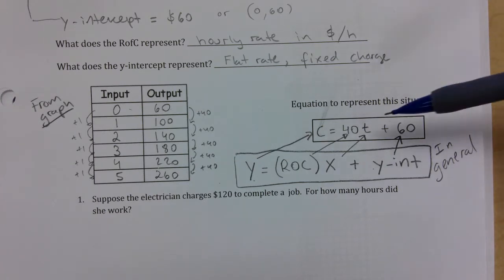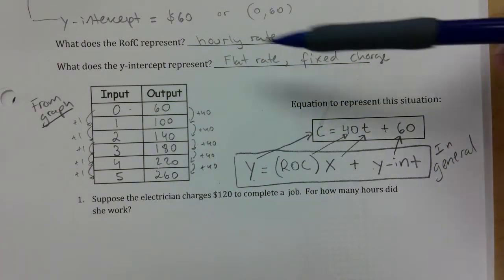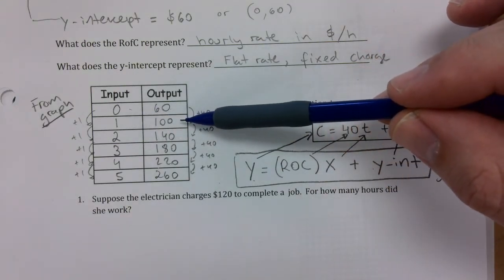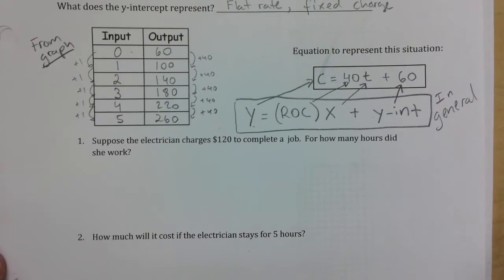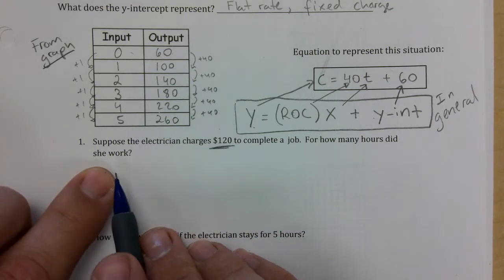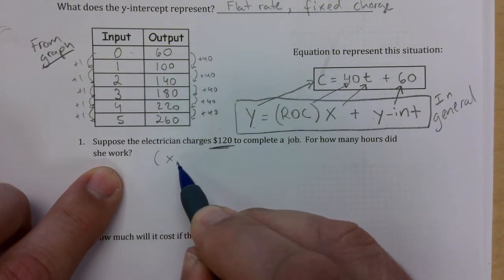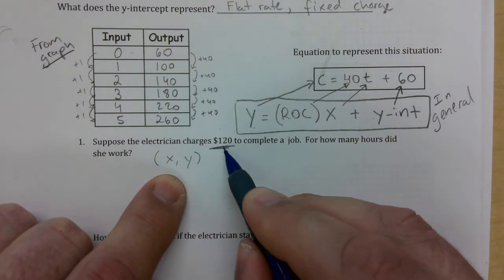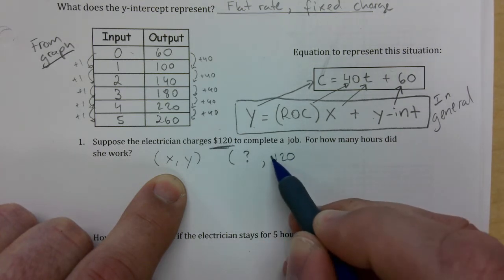Think about it: if you work one hour, that's 1 × 40 = 40, plus 60 equals $100 — which is corroborated by the table. You can now use the equation to find one and a half hours too. For 'suppose the electrician charges $120 — how many hours did she work?' they're giving you the cost and asking for the x value, the time.